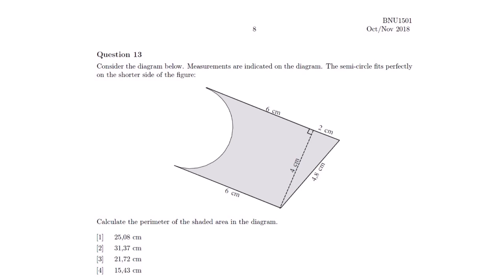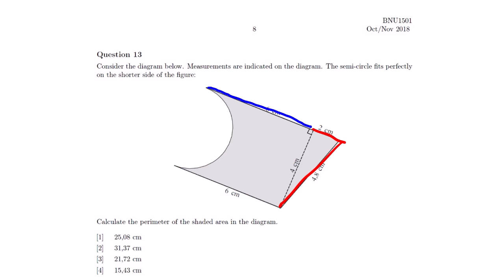The question asks: calculate the perimeter of the shaded area in the diagram. We know that the perimeter is the sum of the outer sides of the shape. We are going to take this side, plus this side, plus this side, plus this side — remember that it is the shaded area — and then lastly this side. If we get the sum of all these sides, we will be able to select our correct option.